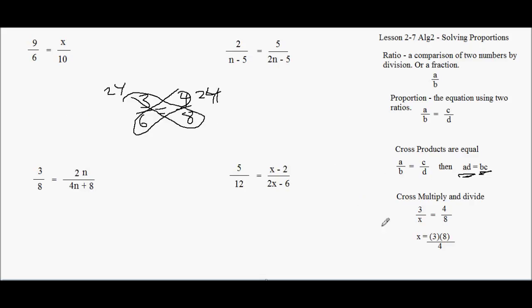In solving a proportion, we either do the cross-product or we do cross-multiply and divide. If I had three over X equals four over eight, we call it cross-multiply. We multiply the three times the eight, and we get 24, and I divide it by four. So 24 divided by four, which is six.